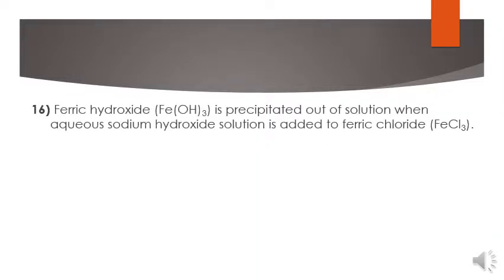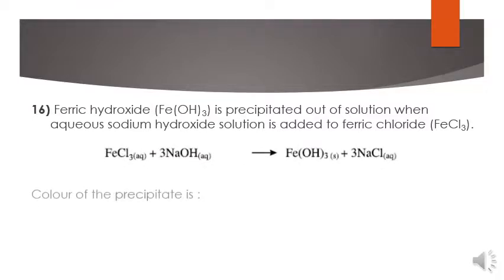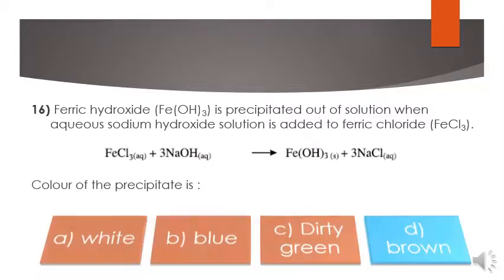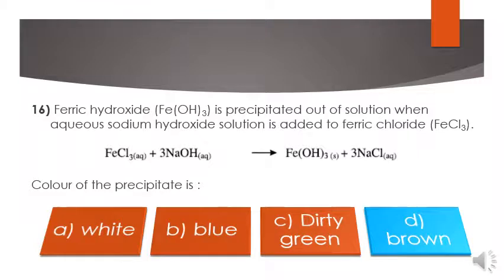Another MCQ: ferric hydroxide is precipitated out of a solution when aqueous sodium hydroxide solution is added to ferric chloride. This is the equation. Color of precipitation is: from following options, the precipitation color for ferric hydroxide is brown. This comes from base precipitation long questions.